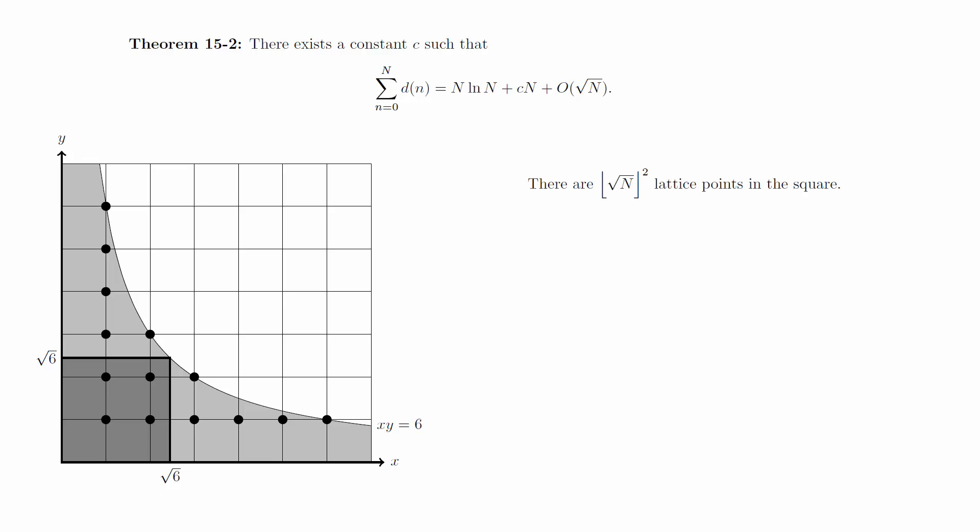To count the lattice points in the upper region, we will count the lattice points along the vertical line x equal n that are above the square. We know that the line touches the hyperbola at the height of capital N over little n so that there are the floor of capital N over little n lattice points below the hyperbola on the line.